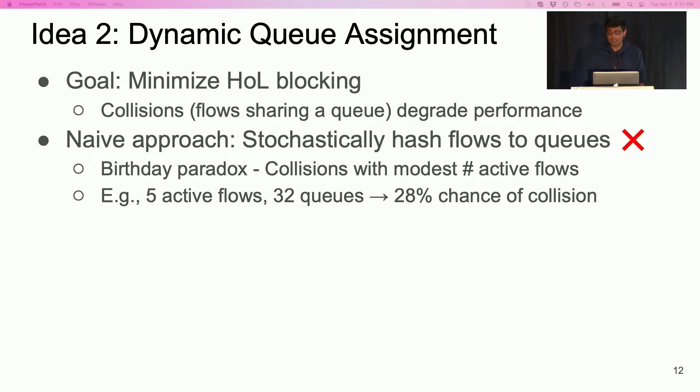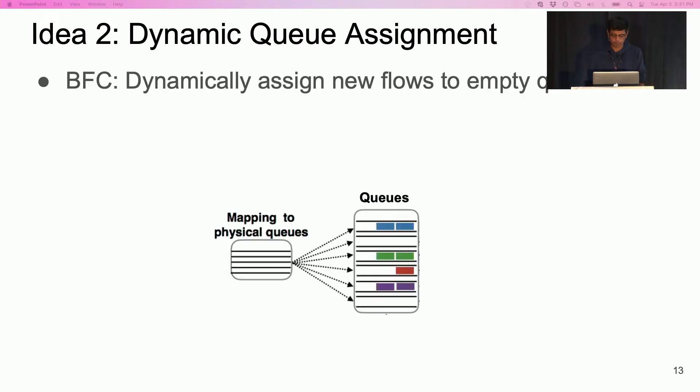In this example, ideally, there should have been no collisions. Since data center operators often care about tail latency, even a small fraction of these collisions can hurt performance. We can do much better than stochastic assignment.